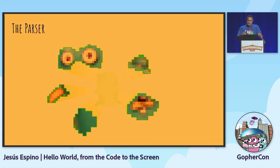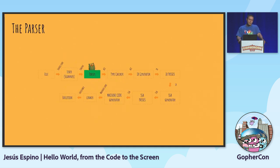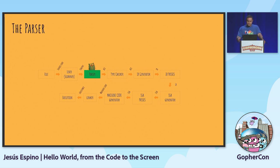Once we have the lexer, we jump into the parser - actually, the parser is the one asking for tokens. The parser keeps asking for tokens from the lexer, and the lexer provides them on demand. The parser generates an abstract syntax tree (AST), which is a tree structure that represents our code. This different representation is more suitable for the compiler to work with.